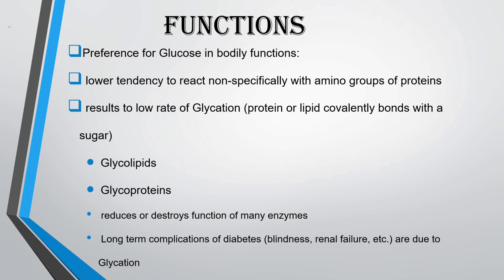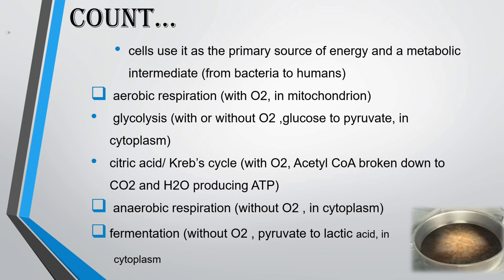Long-term complications of diabetes — such as blindness and renal failure — are due to glycation. Glucose is also used by cells as the primary source of energy and as a metabolic intermediate, from bacteria to humans.